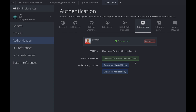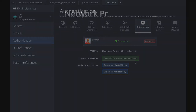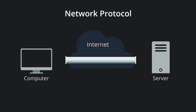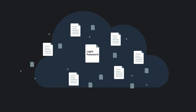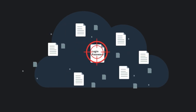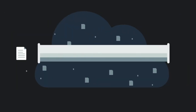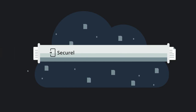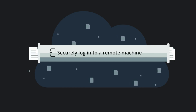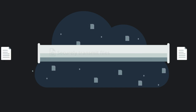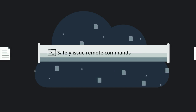Before I do that, I want to take a quick detour and talk about SSH. SSH is a network protocol that allows one computer to securely connect to another over an unsecured network like the internet. Without encryption, data travels over the web in plain text, making it easy for someone to intercept username or password data. SSH encrypts your data through a tunnel so you can securely log into a remote machine, securely transmit files, or safely issue remote commands.